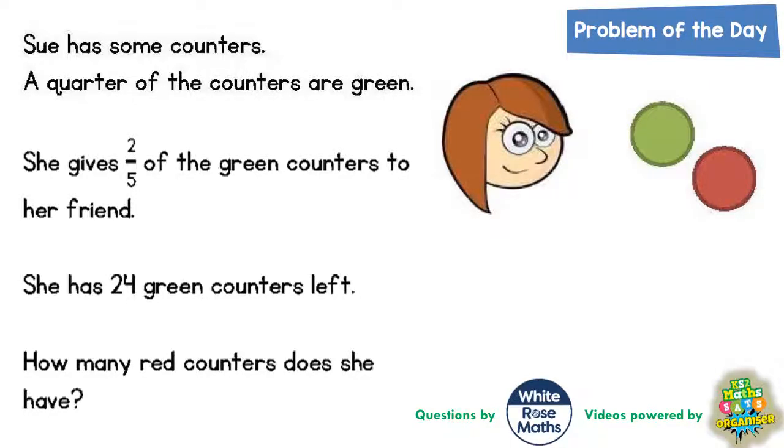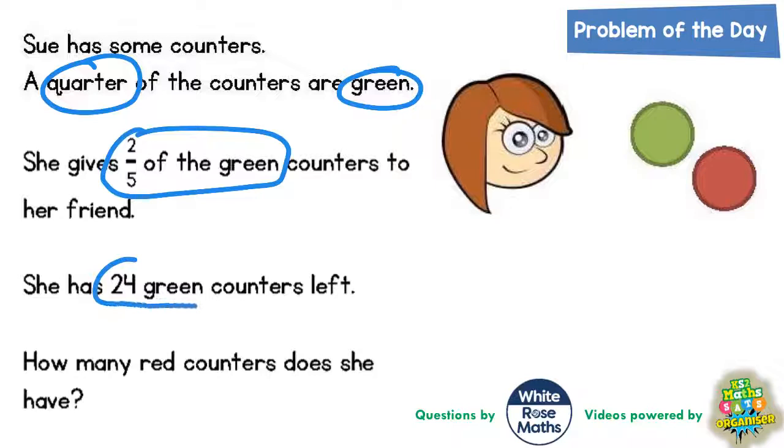Welcome problem solving fans to another problem of the day and this one's all about Sue's counters. A quarter of the counters are green. She gives two-fifths of the green counters to her friend and she has 24 green counters left. How many red counters does she have?